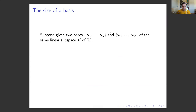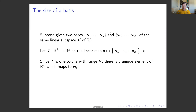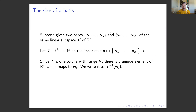Let's talk about the size of a basis. Suppose we are given two bases V1 through Vk and W1 through Wl, where a priori K and L are different integers, of a linear subspace V of Rn. Consider the map T from Rk to Rn as before. Since T is a one-to-one linear transformation with range V, there exists a unique element of Rk which maps to each wi — the pre-image — so we call it T inverse of wi.